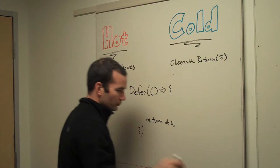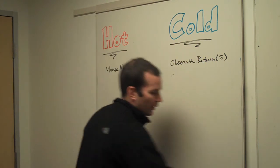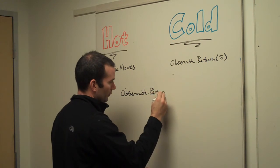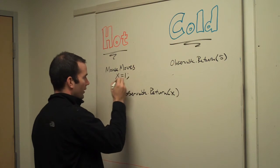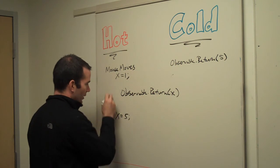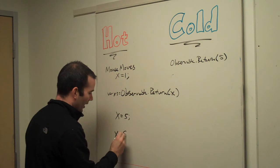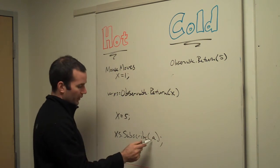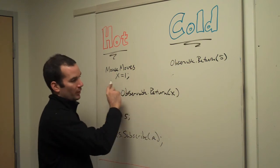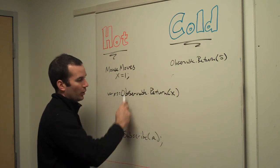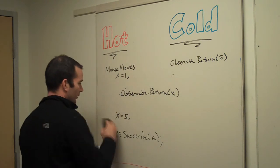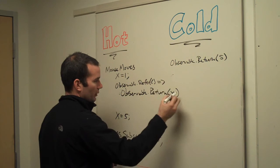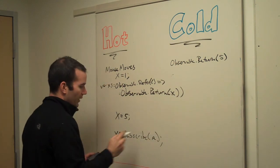So for example, if I have Observable.return of x, and I say x equals 1 right here, then x equals 5 right here, and I subscribe here — the value that the subscriber receives is going to be 1, because x is evaluated eagerly and is hot at that point. But we can defer this whole computation and make the use of x cold by using Observable.defer, assigning it to xs — and now at subscription time, we get the value 5.